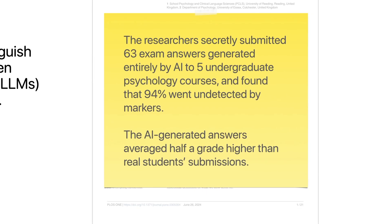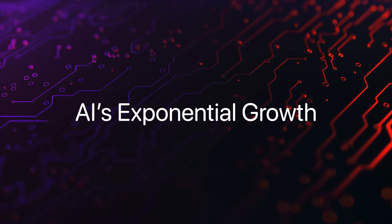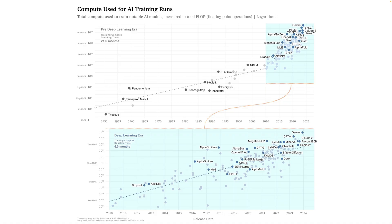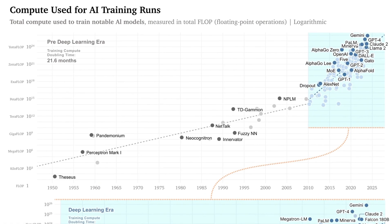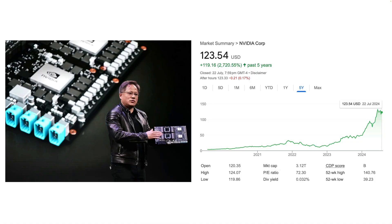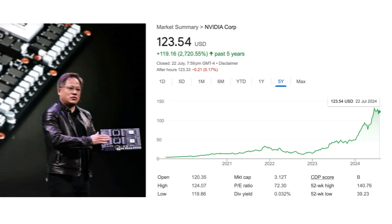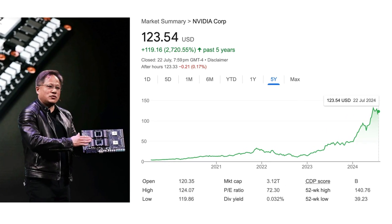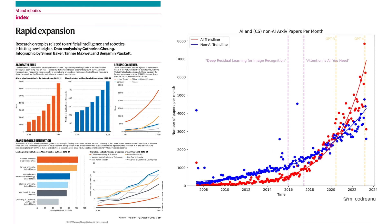They found that 94% went undetected by markers, and the AI-generated answers averaged half a grade higher than real student submissions. And the problem is many of these papers tested older models. The power and sophistication of these models are growing exponentially — in terms of computing power for training and inference, the amount of investment into AI hardware like NVIDIA's GPUs, which are designed to meet the growing computational demands of advanced AI, and the explosion of groundbreaking AI research and development. AI isn't just a fad; it's a major technological shift that's going to reshape many sectors, including education.